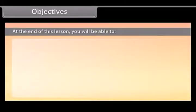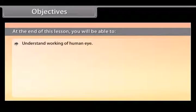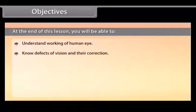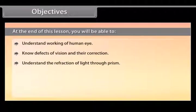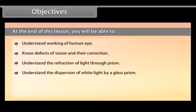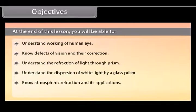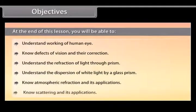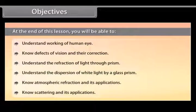Objectives: At the end of this lesson, you'll be able to understand the working of the human eye and defects of vision and their correction, understand the refraction of light through a prism, understand the dispersion of white light by a glass prism, know atmospheric refraction and its applications, and know scattering and its applications.